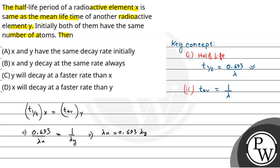From this, lambda-X equals 0.693 times lambda-Y. And from here we can say that lambda-Y is greater than lambda-X. So the decay constant in the case of element Y is greater than the decay constant in the case of radioactive element X.